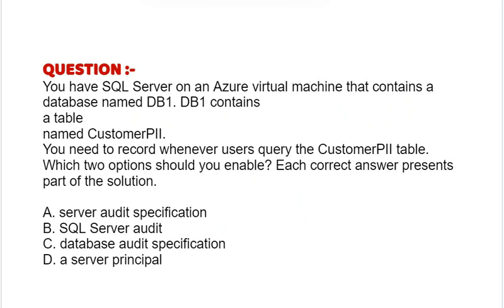Question: You have SQL Server on an Azure virtual machine that contains a database named DB1. DB1 contains a table named CustomerPII. You need to record whenever users query the CustomerPII table. Which two options should you enable? Each correct answer presents part of the solution.